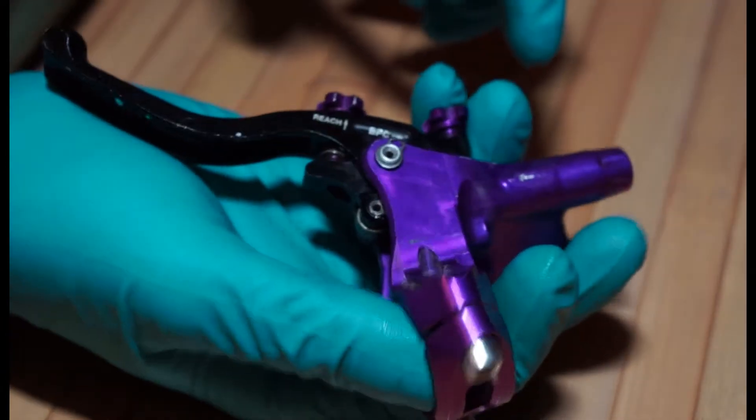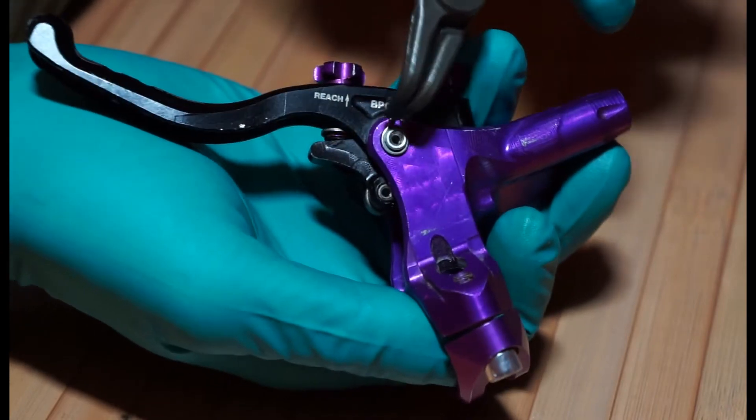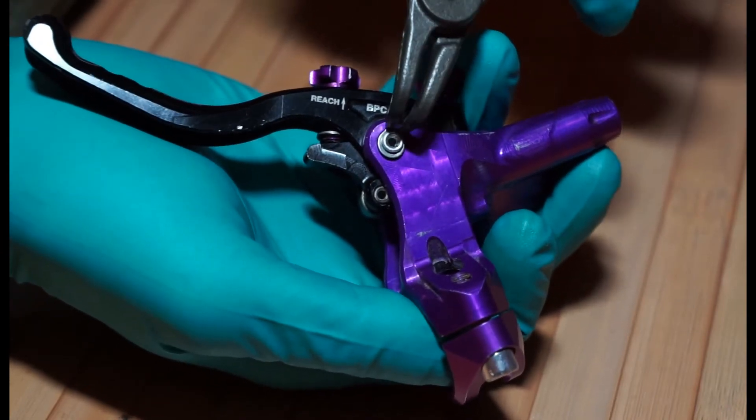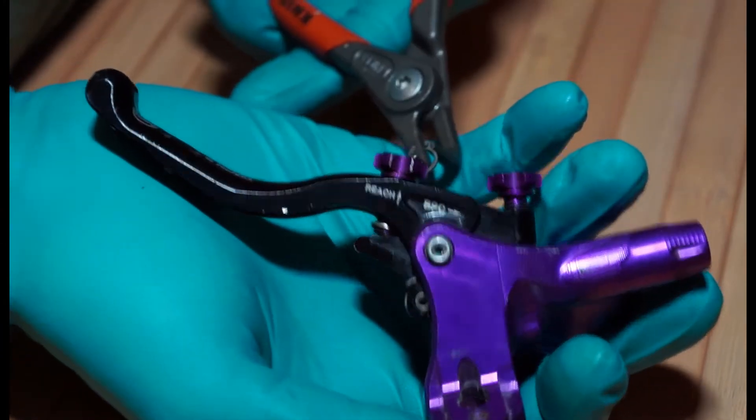We're just going to take that, put the little circlip plier into that gap in there. I'm just going to open it up. And that means we can pull that little circlip off.